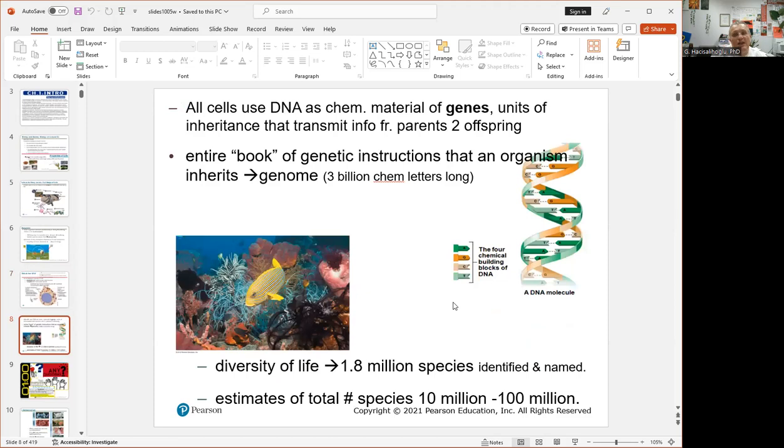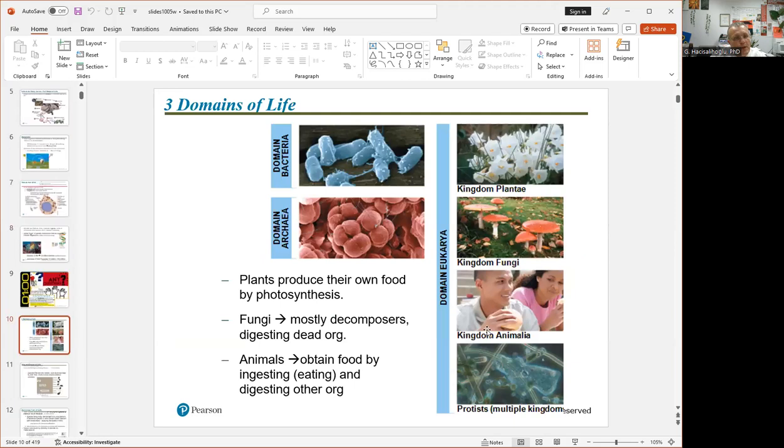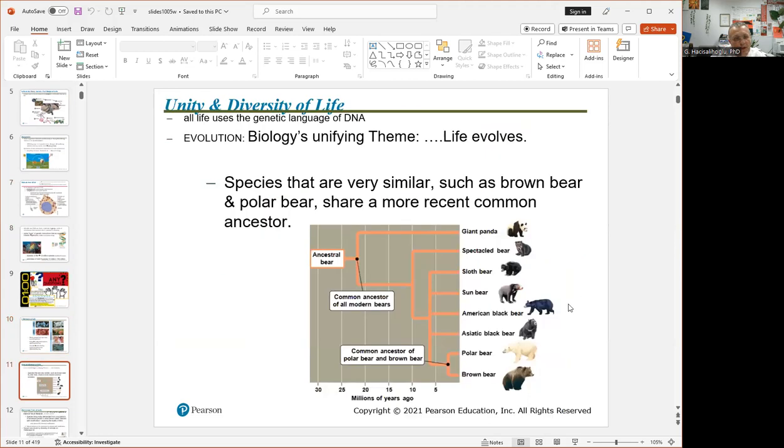One thing that combines all these 1.8 million species is DNA. If the whole genome is a book, DNA is basically inside there. You can see here it's made of four nucleotides: A, T, C, G. A likes T, C likes G. There are three domains of life: bacteria, archaea which is a special bacteria, and eukarya. Eukarya includes plant, fungi, and animalia - these are kingdoms under eukarya.